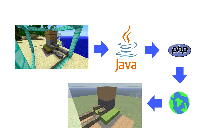We'll achieve this by first writing a short program in Java that will access the block data and save it out to a text file that we can then import into OpenSim to recreate the blocks there. Don't worry if you don't understand the code - I'm going to post it online so you can copy and paste it and just change a few lines.